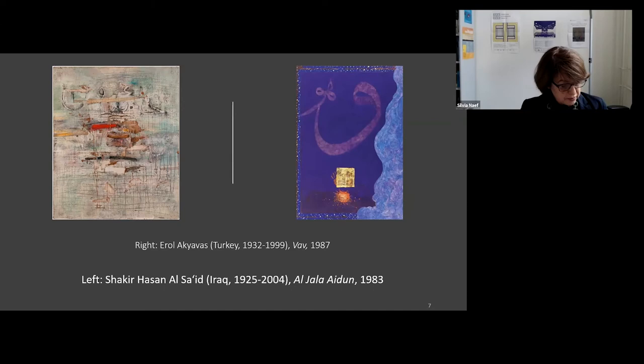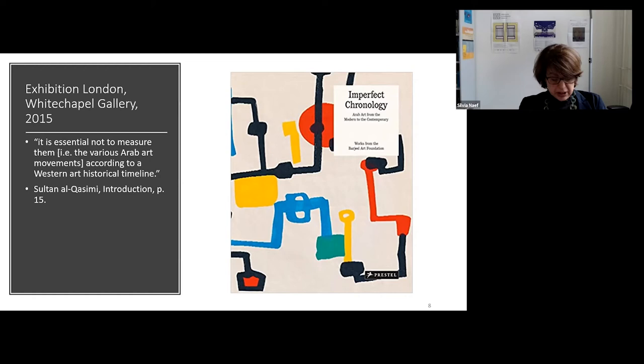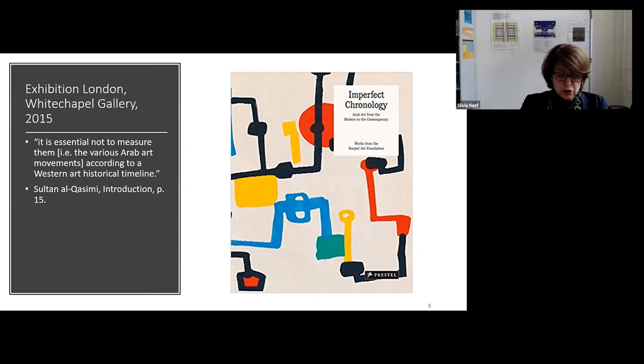Such judgments are still widespread and they take the Western art historical chronology and interpretation as the unit of measurement. I would rather adopt here Sultan al-Qasimi's notion of imperfect chronology, when he says — and I quote — it is essential not to measure them, and he means the Arab art movements, but we can extend it to movements in Iran or Turkey, according to a Western art historical timeline. These movements have to be measured in their own right and in their own context.